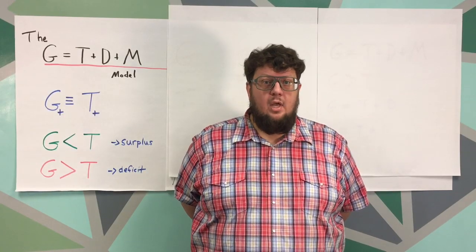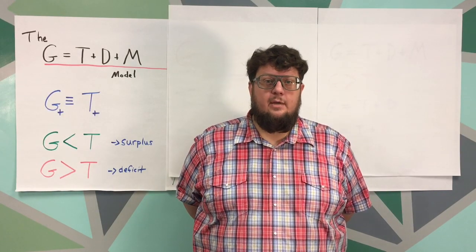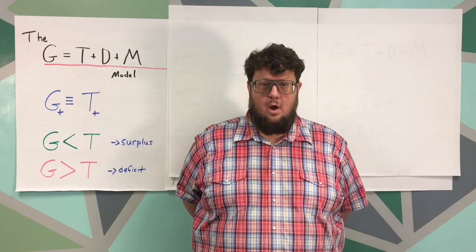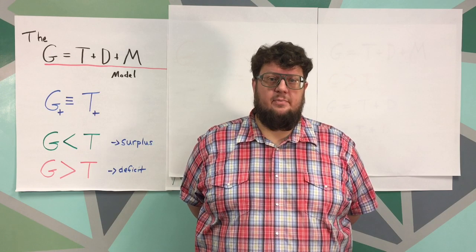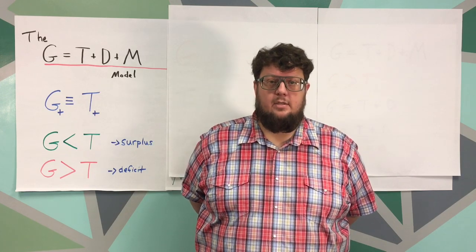My name is Benjamin Faust and today we're going to talk about the G equals T plus D plus M model, which is a way for us to model the choices that governments have to make when they are funding their operations.